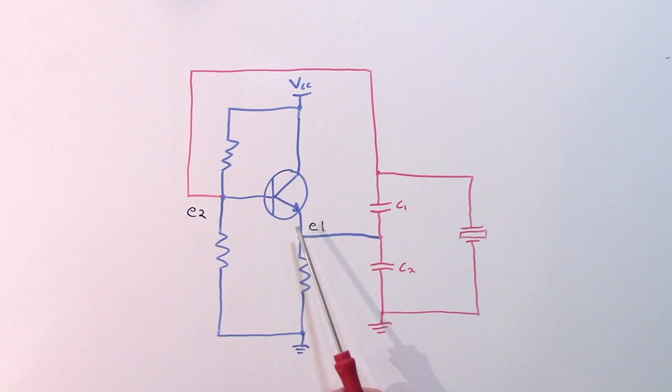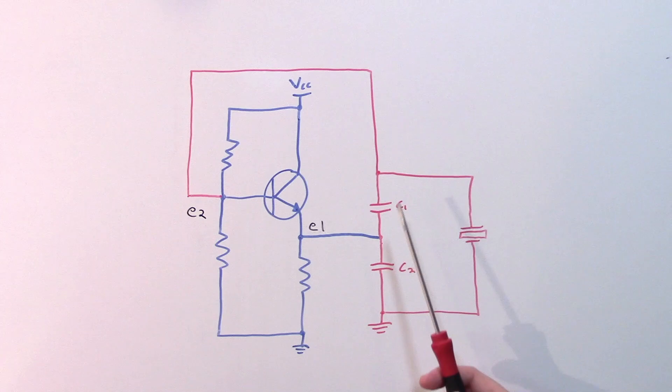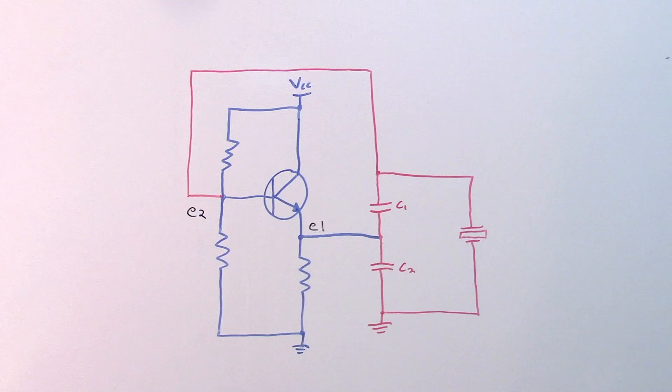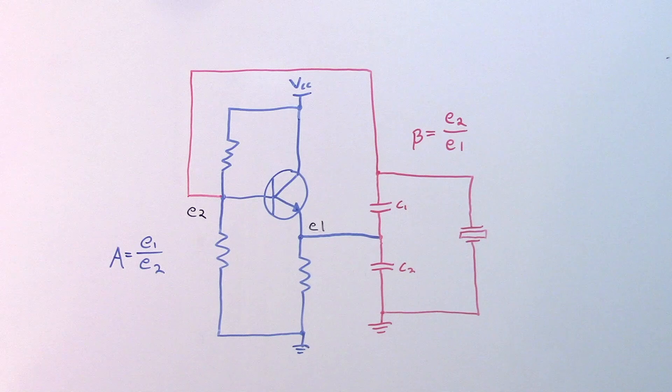Another thing we need is a phase shift of zero. Since this is just an emitter follower, its output will be in phase with its input, so as long as there's no phase shift through the feedback network, we satisfy that criteria. The only remaining requirement is that the total loop gain needs to be greater than one in all practical purposes in order to start oscillation.